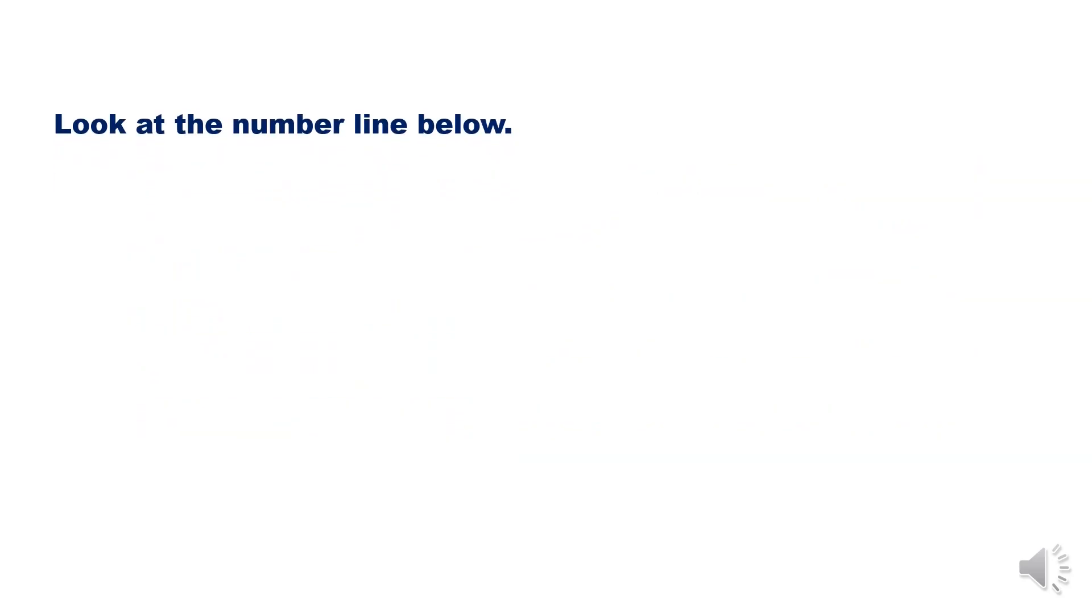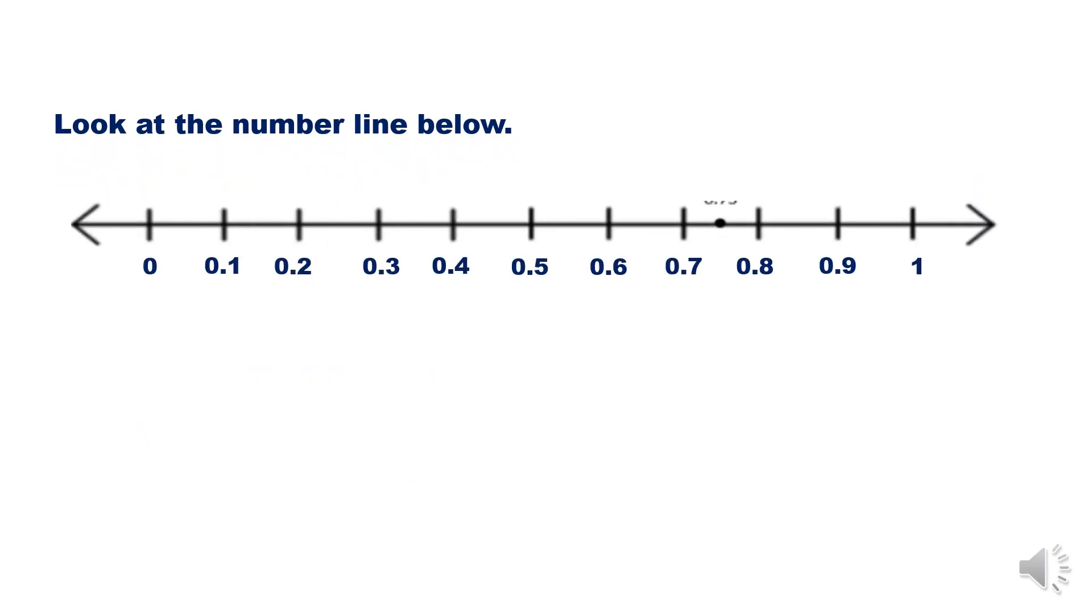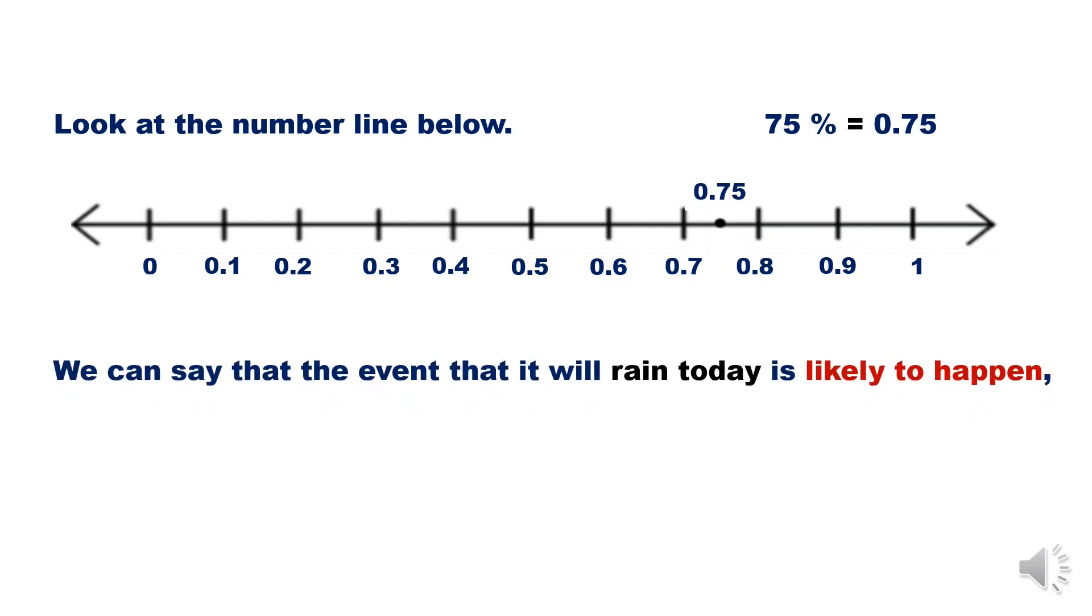Look at the number line below. Remember, 75% is equal to 75 over 100, or 0.75. In the number line, that is between 0.7 and 0.8. We can say that the event that it will rain today is likely to happen, because based on the number line, 75% or 0.75 is closer to 1, or 100%.